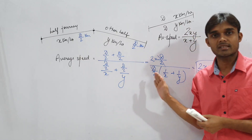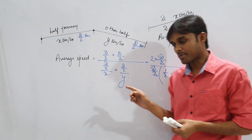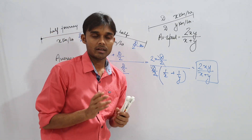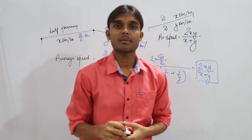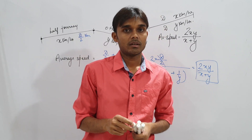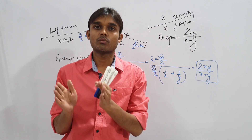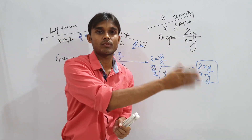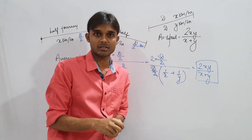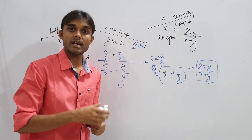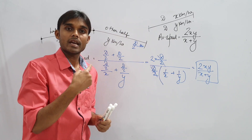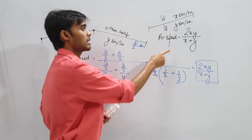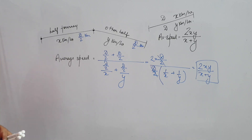This is what makes the trick so important: both cases — return journey and half-distance journey — give the same formula 2xy/(x+y). Whether the question says a man went from Hazaribagh to Ranchi and came back, or traveled half distance at x and half at y, the answer is 2xy by x plus y.